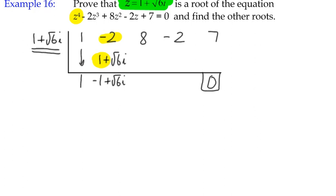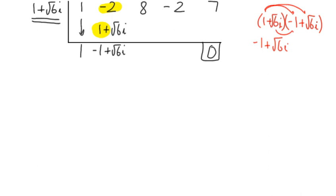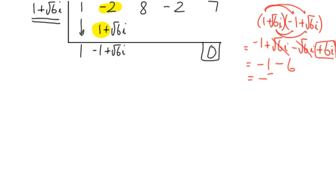Now we multiply −1 + √6i by 1 + √6i. Working this out at the side: (1 + √6i)(−1 + √6i) = −1 + √6i − √6i + √6i · √6i. The two √6i terms cancel. √6 × √6 = 6, and i² = −1, so +6i² = −6. That gives us −1 − 6 = −7.